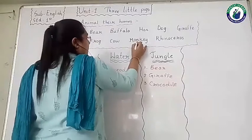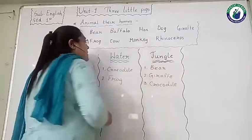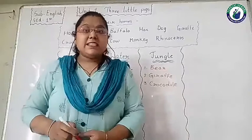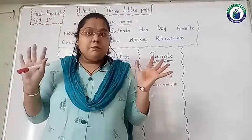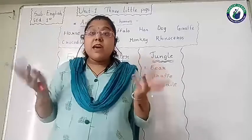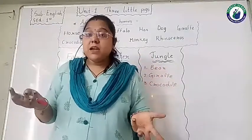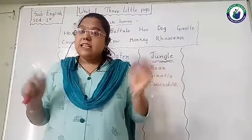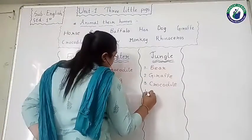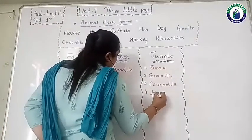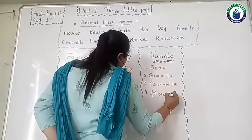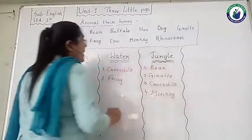Next — M-O-N-K-E-Y, monkey. Can we see a monkey here near us? No. Where can we see a monkey? In the jungle. So monkey is a jungle animal. Write monkey, M-O-N-K-E-Y, in the jungle column.